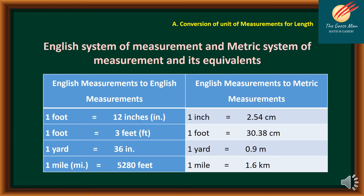To help you master the conversion of the English system to the metric system and vice versa, it is helpful if you memorize this table of conversion. For English to English measurements: one foot is equal to 12 inches, one yard is equal to 3 feet, one yard is equal to 36 inches, and one mile is equal to 5,280 feet. For English to metric: one inch is equal to 2.54 centimeters, one foot is equal to 30.48 cm, one yard is equal to 0.9 meters, and one mile is equal to 1.6 kilometers.